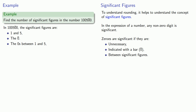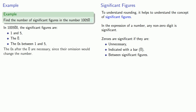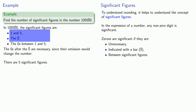Finally, this last zero — the one after the zero with the bar — is not a significant figure, because if we omitted it, we would change the value of the number. So that means this number has five significant figures: the 1 and the 5, the 0 with the bar over it, and the zeros between the 1 and the 5.